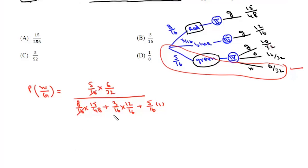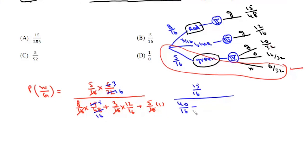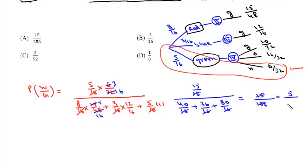Cancelling the 16s, we get: numerator is 30 by 16. Denominator: 15 by 16, plus 36 by 16, plus 40 by 16 gives 156. After simplification, the result is 15 upon 156, which gives the answer as option C.